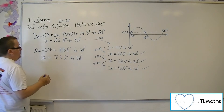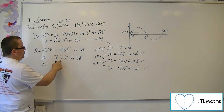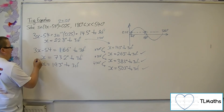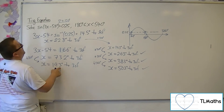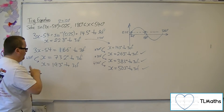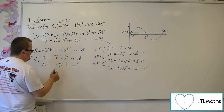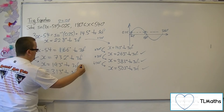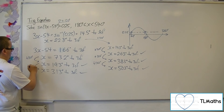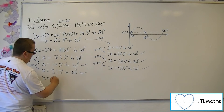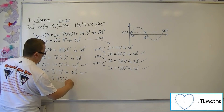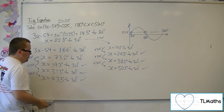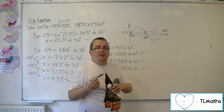Now doing the same for 73.2 — adding on 120 gets me 193 to 3 sig fig. 193 is within the 180 to 540 range, so that's fine. Adding on another 120 gives 313 — both of those are within range. Then adding on another 120 gives 433, which is also fine. Adding on another 120 would give 553, which is outside the range.